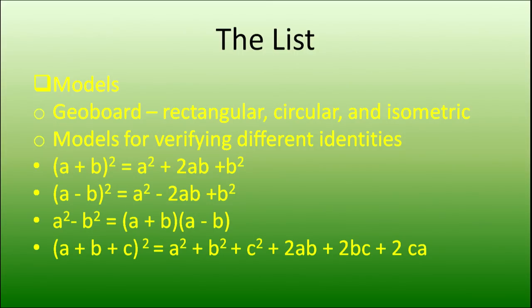Then we can have a number of models. We can have a geoboard — rectangular, circular, or isometric. We may have models for verifying different identities, such as (a+b)² = a² + 2ab + b², and a model for (a−b)² = a² − 2ab + b².